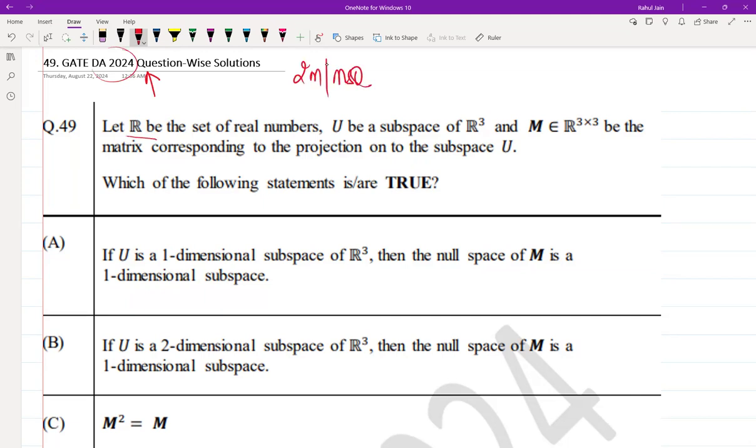The question is as follows: Let R be a set of real numbers and U be a subspace of R³, and M belongs to R³×³ be the matrix corresponding to the projection on the subspace U. Which of the following statements is/are true?